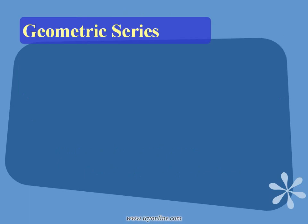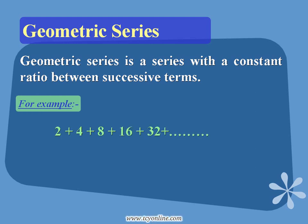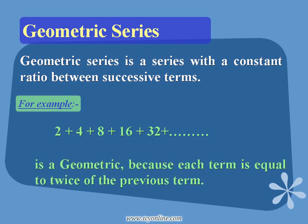Now let's see the definition of geometric series. What does geometric series really mean? A geometric series is a series with a constant ratio between two successive terms. For example, we have the series 2 plus 4 plus 8 and so on, which is a geometric series because each term is equal to twice the previous term.